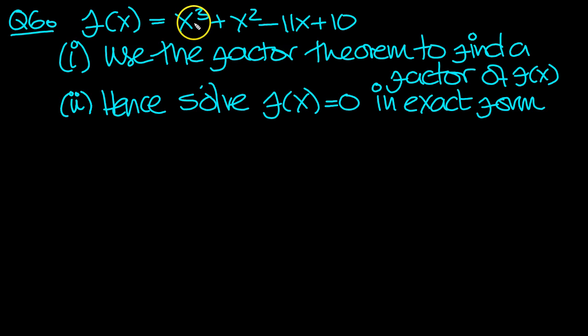So let's have a look at this then. Now I can see if I put 1 in, 1's not going to give a 0, so I'm not going to bother with 1. What about 2? 8 and 4 is 12. Yeah, 2 looks good.